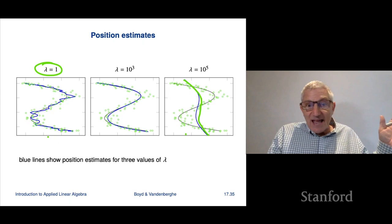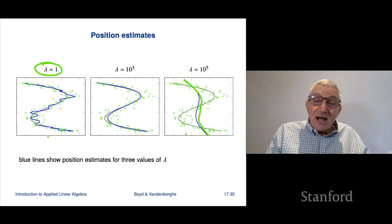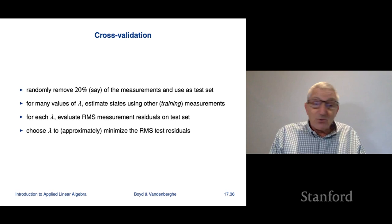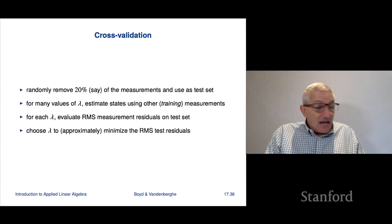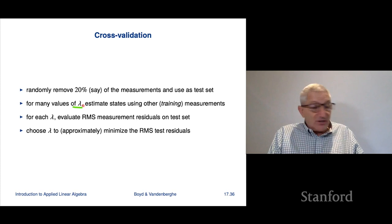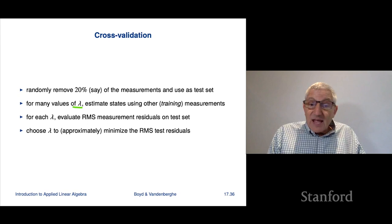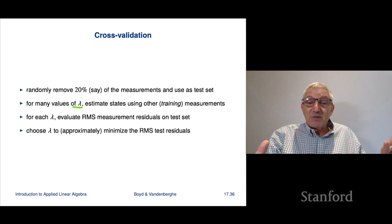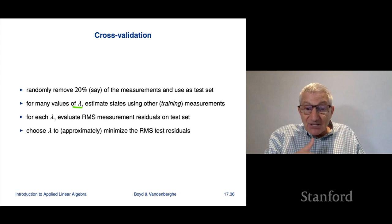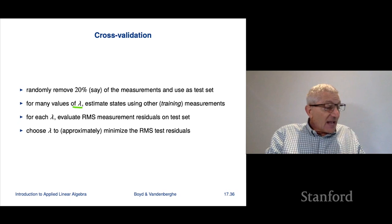Okay. Now, in this case, well, okay, we know what the exact solution is. It's kinda clear that lambda equals 10 to the 3 is about right. But let's see how we would do this with cross-validation or validation, I should say. So here's what we do. We just randomly remove 27 of the measurements and use that as a test set. Then what we do is for some 10, 20, 30 values of lambda, we do the complete estimation problem. And we use the other measurements. And when they say what happened to the 20% of the measurements that aren't there, we just say missing, just missing. Okay. It's a lie. We actually have those measurements. We're just holding them in escrow so that we can actually see how well our system works, our state estimation works.